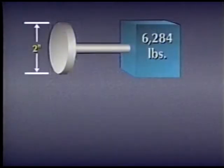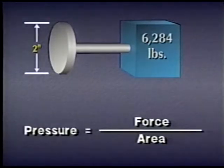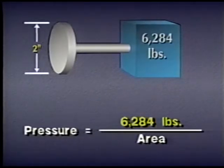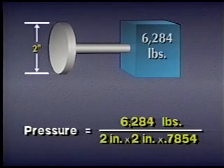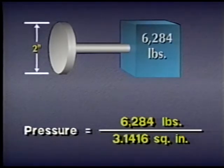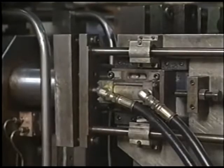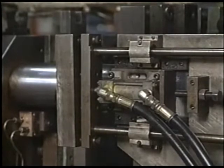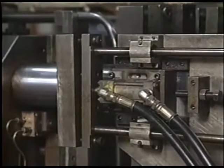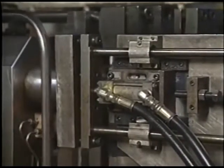For example, suppose we have a 6,284-pound load to be moved by a cylinder with a 2-inch bore. To calculate the pressure required, we divide 6,284 pounds by the area of the piston. That area is 2 times 2 times 0.7854, or 3.1416 square inches. 6,284 divided by 3.1416 equals 2,000 pounds per square inch. To move the load, the hydraulic system must operate at 2,000 psi. In the real world, we also have to account for friction and other inefficiencies, so more pressure would be required.